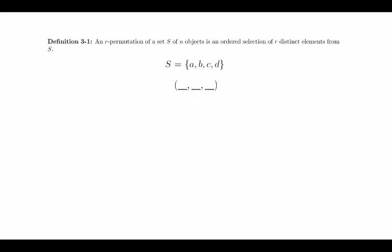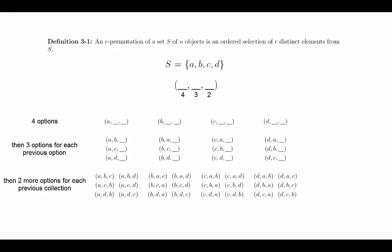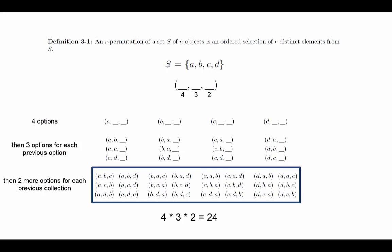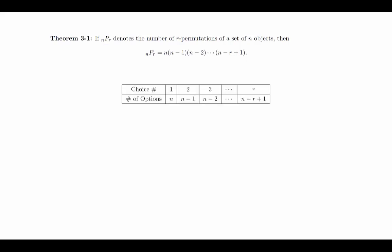The next theorem provides a formula for the number of R permutations of a set of n objects. We read this symbol as 'n permute R.' The proof is nothing more than thinking through the number of choices at each step and applying the general combinatorial principle. For the first choice, there are n options. For the second choice, there are n minus 1 options. For the third choice, there are n minus 2 options. The pattern continues all the way down through the rth choice, at which point there are n minus R plus 1 options. Using the general combinatorial principle, we multiply these numbers together to get the desired result. As a quick notational note, we define n factorial to be the product of the first n natural numbers. For example, 4 factorial equals 4 times 3 times 2 times 1, which is 24. For convenience, we will define 0 factorial to be 1.